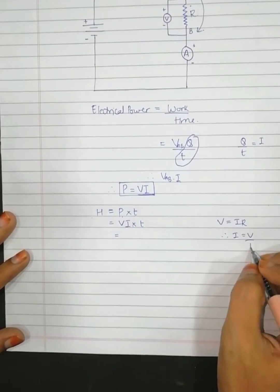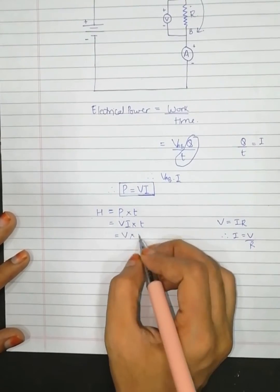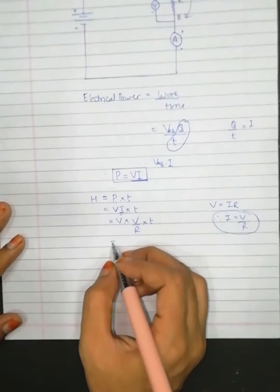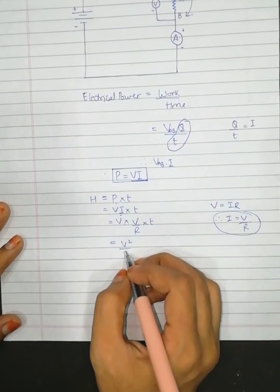Now we have by Ohm's law V equals IR. So V into V upon R into T. In place of I, I wrote V upon R. This can be written as V square upon R into T.